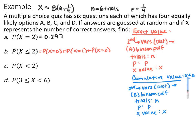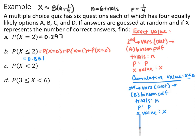Using the cumulative distribution: go to second, VARS, then B for binomial CDF, with 6 trials, probability 0.25, and X value of 2. You should end up with 0.831, which is exactly the same as if you had added the three individual probabilities together.